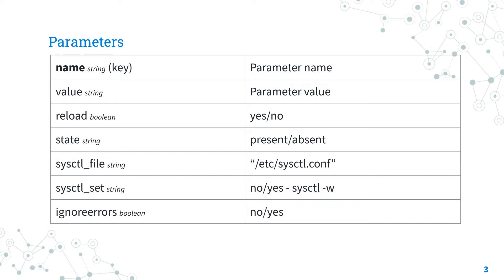Another handy parameter is 'ignore_errors', a boolean that allows you to ignore errors about unknown keys, defaulting to no. This could be useful if your fleet is very wide and has different versions of the kernel running.